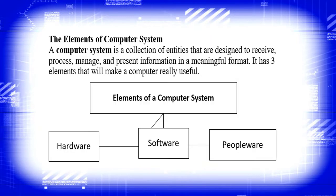Now let's talk about the elements of a computer system. A computer system is a collection of entities that are designed to receive, process, manage, and present information in a meaningful format. It has three elements: hardware, software, and peopleware.